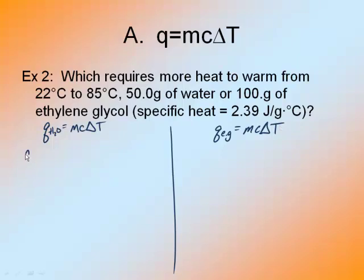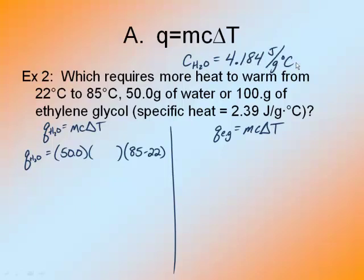Plug into the formula what you know. I'm solving for heat. I know the mass of the water is 50 grams, and I know the change in temperature, it's from 22 degrees Celsius to 85. So the final is 85 minus the initial, which is 22. But notice I'm missing the specific heat here. Something you need to know.